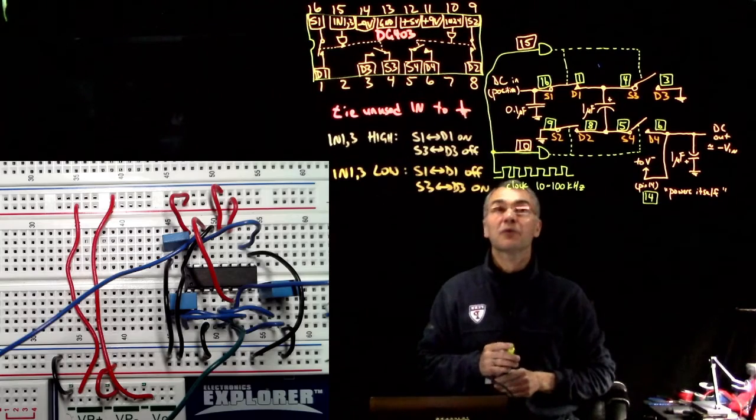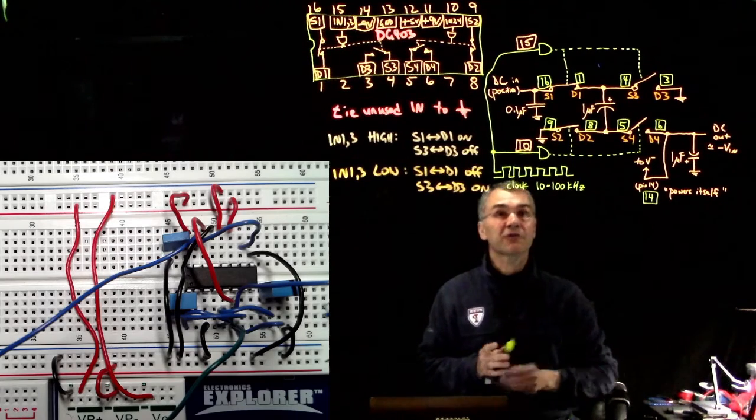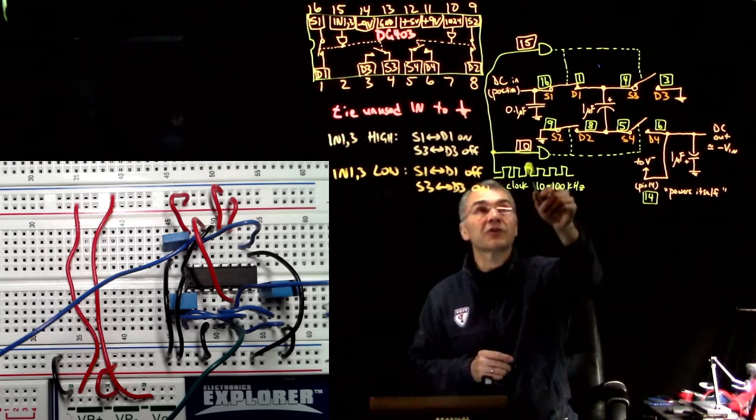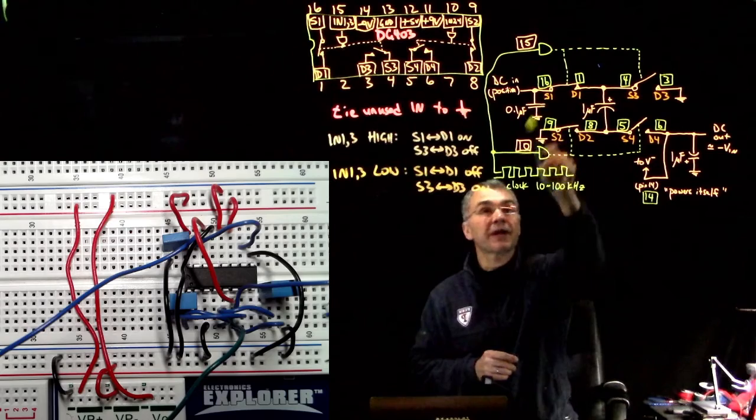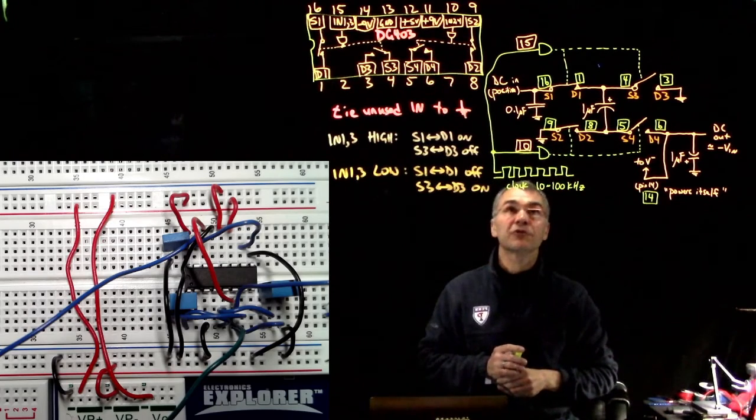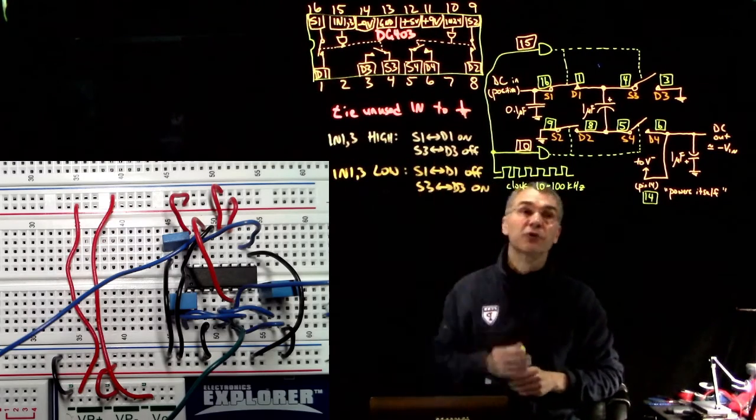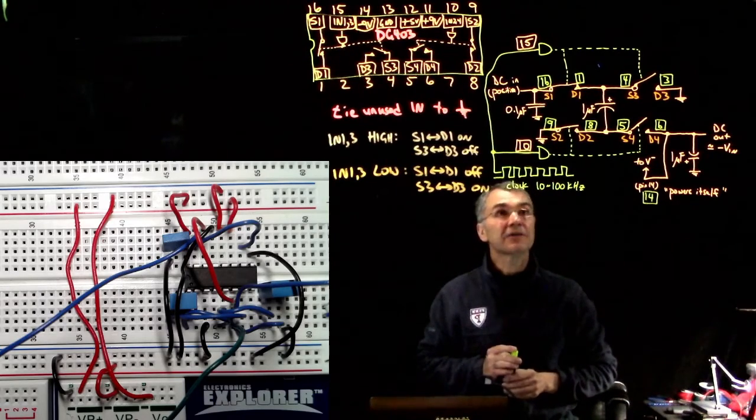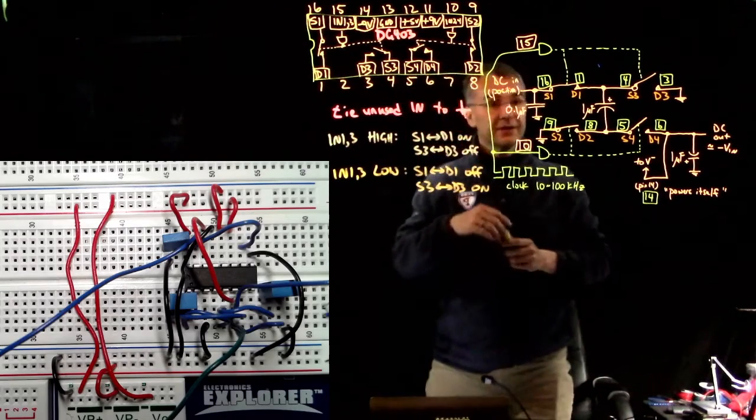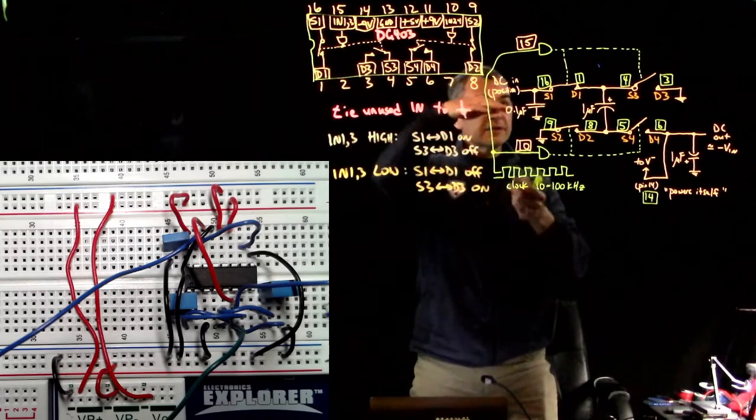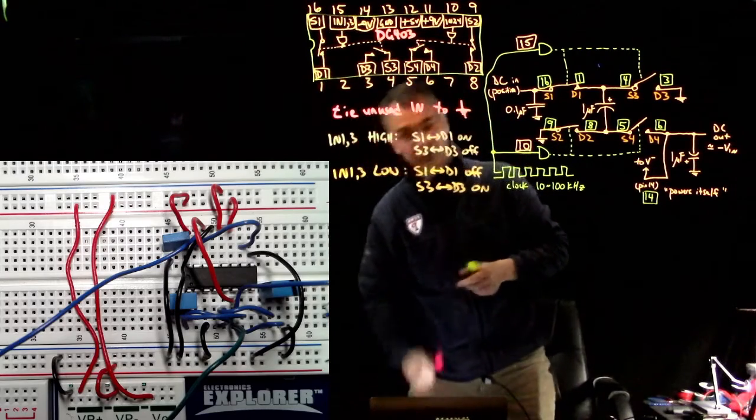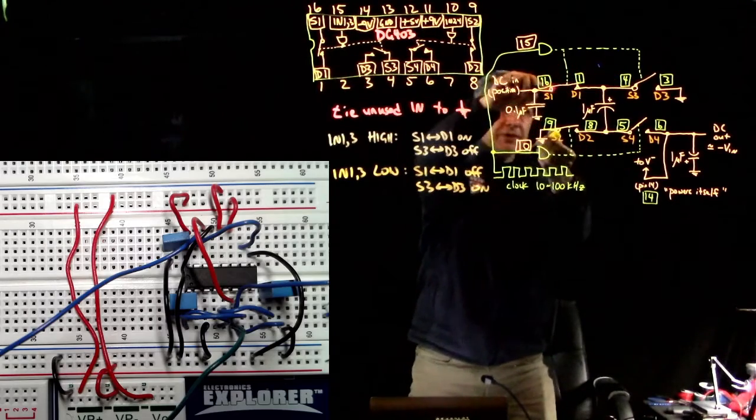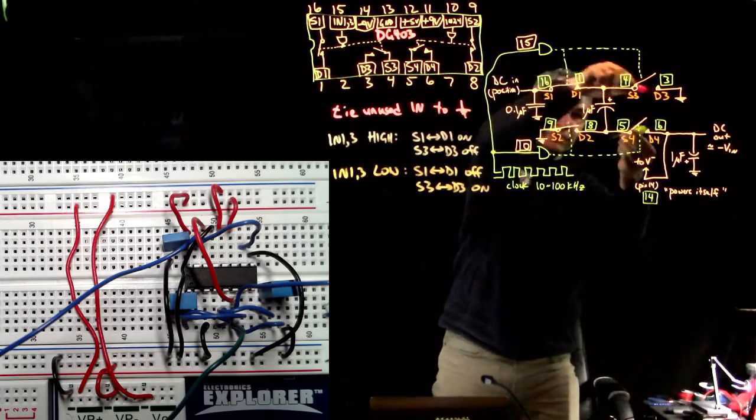So what we're using the analog switch to do here, we have this clock signal which is periodically driving both of the analog switches between their two states. We're using the entire DG403 chip here. When you close, you have both switches closed and these are open, and you go back and forth.